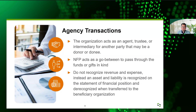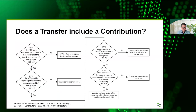The AICPA accounting guide — the Not-for-Profit Entities guide — which if you don't have access to, you really should. It's pretty much the best guide out there for all things accounting and auditing related to not-for-profits, and it has a chapter on contributions. Within that, they provide a handy flowchart that helps walk through whether or not a transfer from one entity to another includes a contribution or not. You can walk through the typical thought process you would go through.